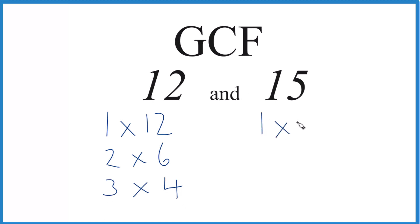15, 1 times 15, and just 3 times 5. So these are the factors. And if we look for the common factors, both have 1, so that works. Both have 3, and it looks like that's it.